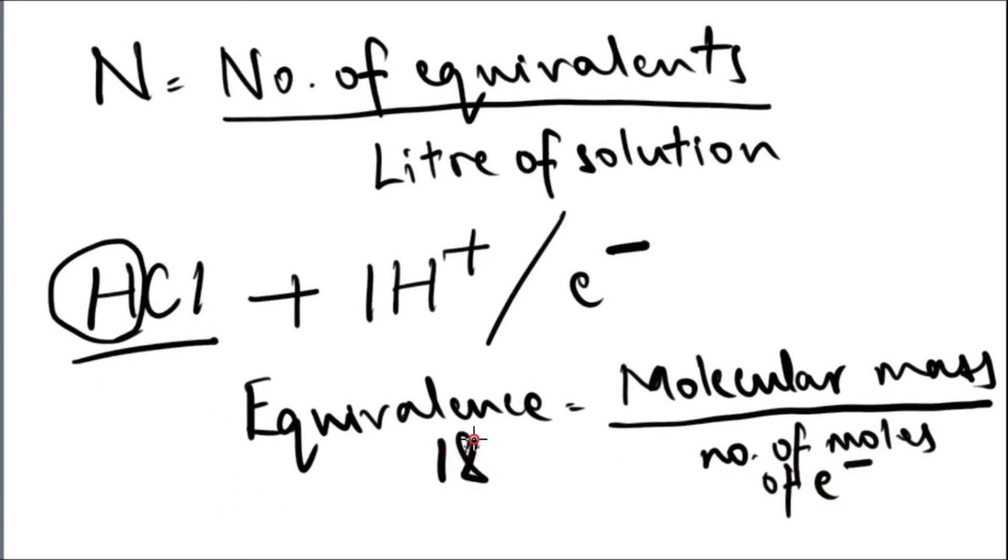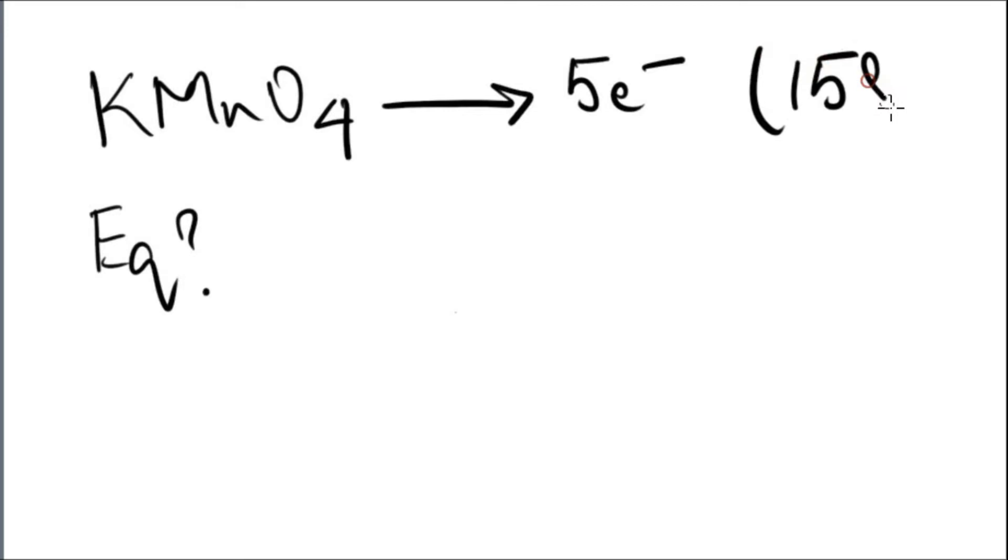For example, to find the equivalence of potassium permanganate, we know that when it is reduced it is going to give five moles of electrons. So you take the molecular mass which is 158 divided by 5 and you get 31 which is the equivalence.